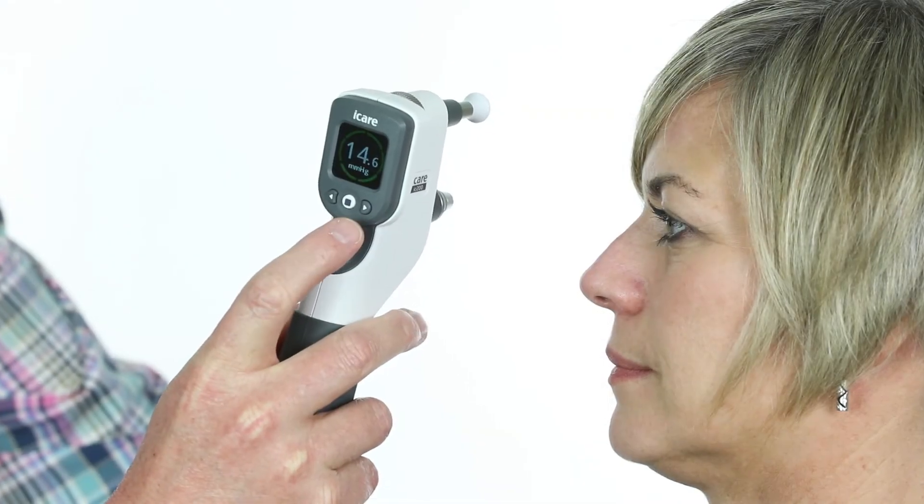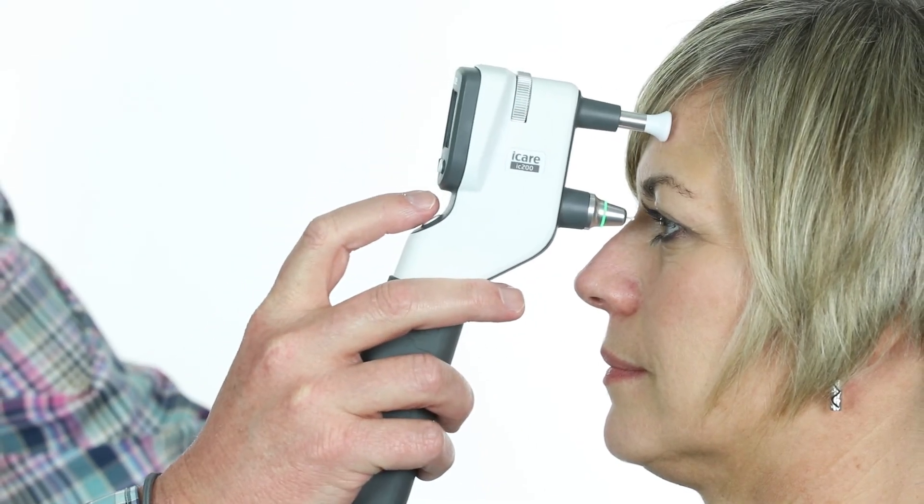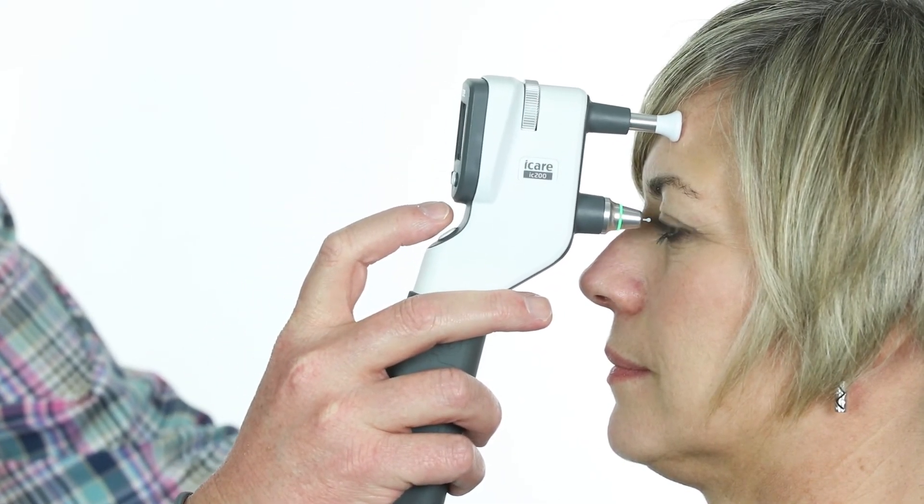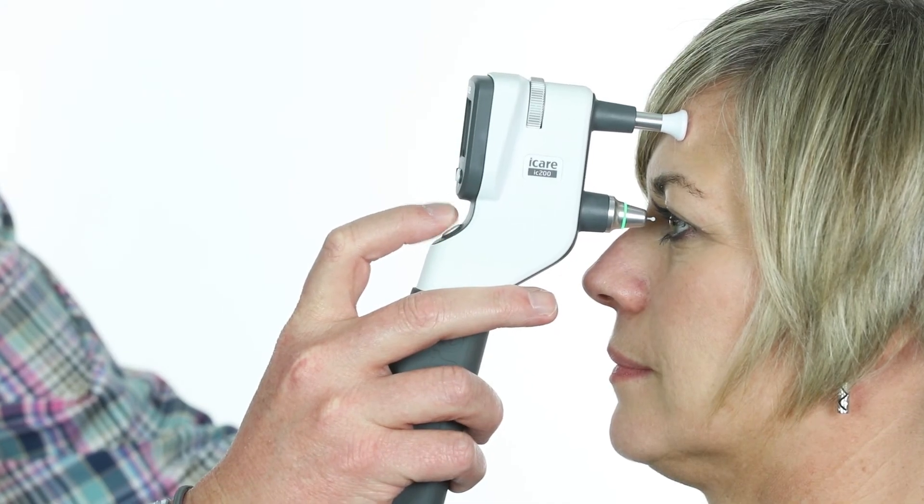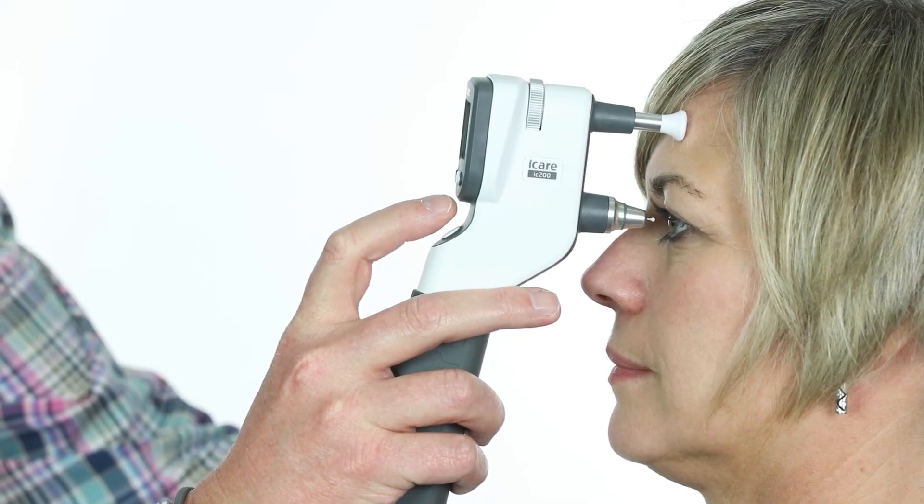Press the measure button once to clear the reading. To perform individual measurements, press the measure button lightly 6 separate times or until you hear a long beep.